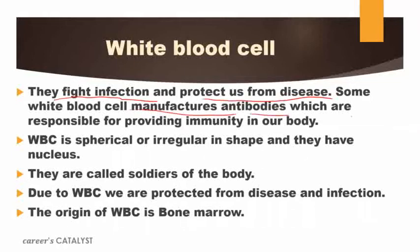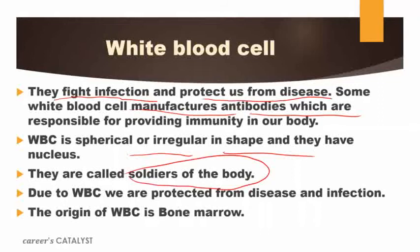Some white blood cells manufacture antibodies. We need antibodies for the prevention of disease. WBC helps create or manufacture antibodies inside our body which are responsible for providing immunity. We can fight against a particular disease by creating antibodies inside our body. WBC is spherical or irregular in shape and they have a nucleus — unlike RBC which has no nucleus. WBC is also called the soldier of our body, and due to WBC we are protected from disease and infection.